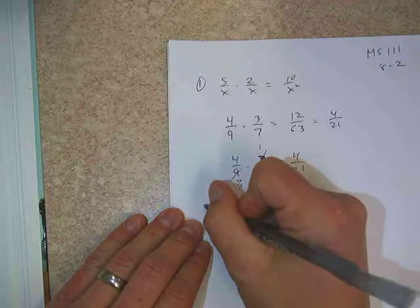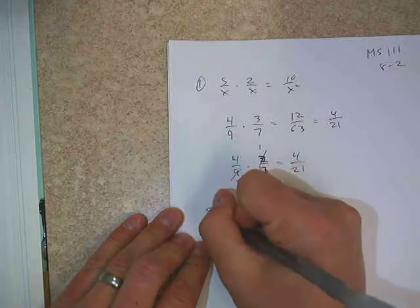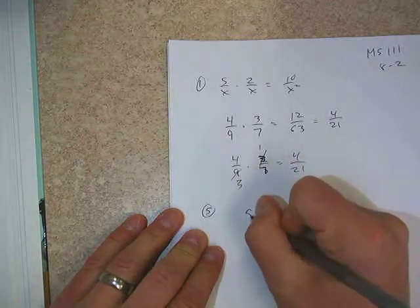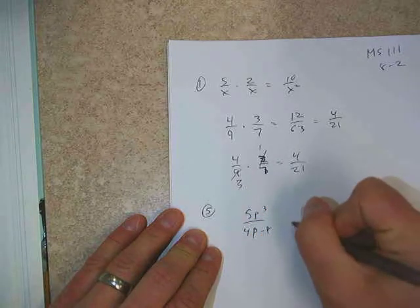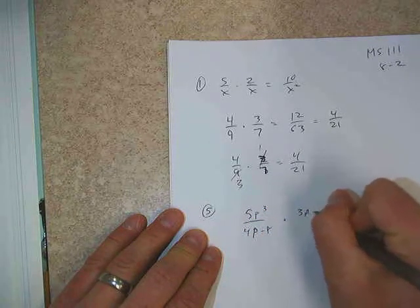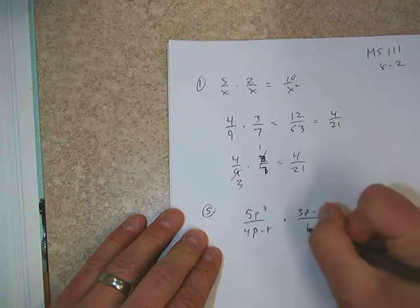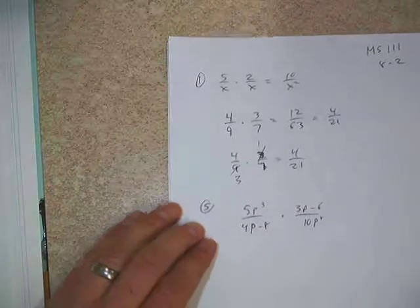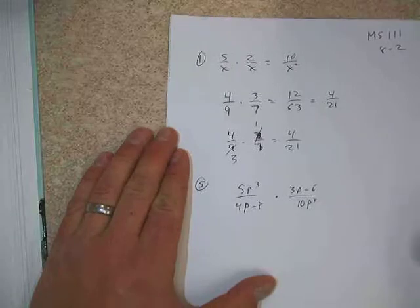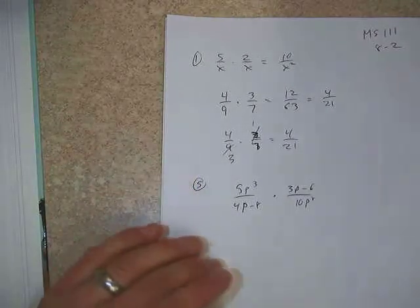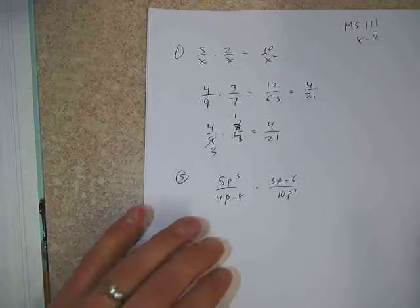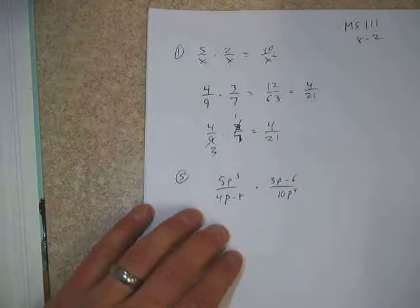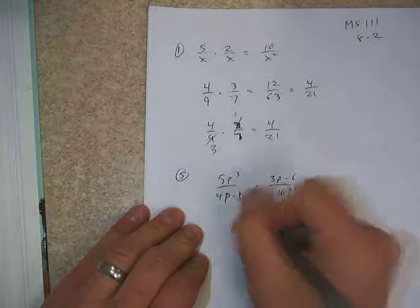So if you would take a look at number 5 next, we have 5p cubed and we have 4p minus 8, multiplying that by 3p minus 6 and then 10p to the 8th over here. So here's the strategy that we're going to use for this one: we're going to use a very similar strategy we did in lesson 8.1, which means we're going to factor anything that can be factored first and cross out any common factors.